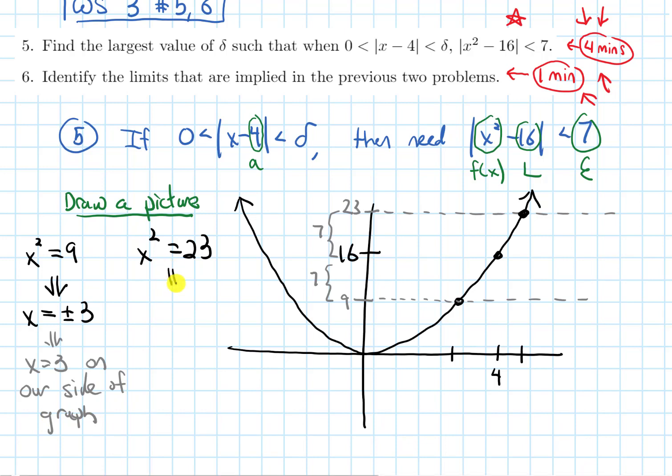Similarly, for x-squared equals 23, square rooting, I get x equals plus or minus root 23. And for the same reason, I just need to worry about x equals positive root 23. Same reason here. So I know this x-value is 3. This one is root 23.